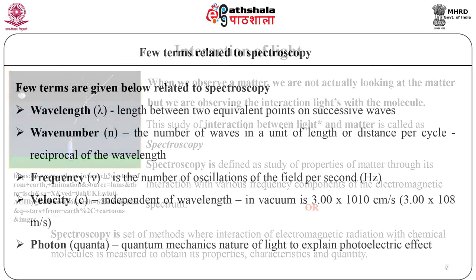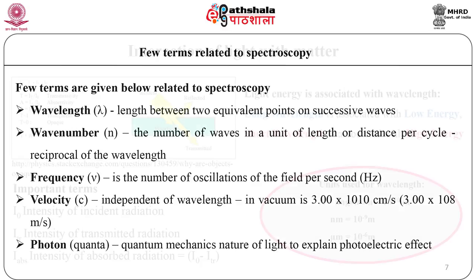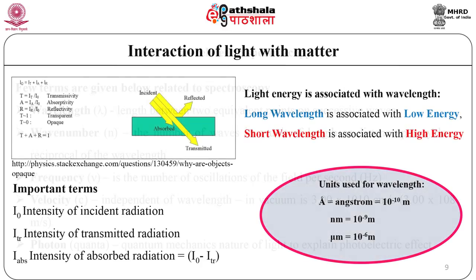Spectroscopy is defined as the study of properties of matter through its interaction with various frequency components of the electromagnetic spectrum. Alternatively, spectroscopy is a set of methods where interaction of electromagnetic radiation with a chemical molecule is measured to obtain its properties, characteristics and quantity. A few related terms include wavelength, wave number, frequency, velocity, and photon — units used in spectroscopy.